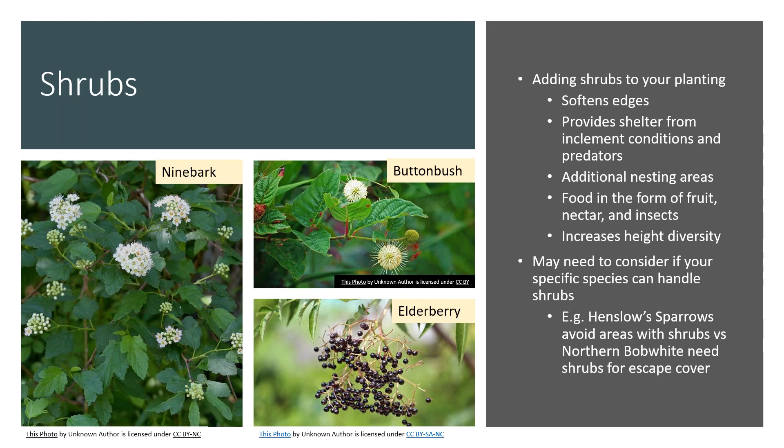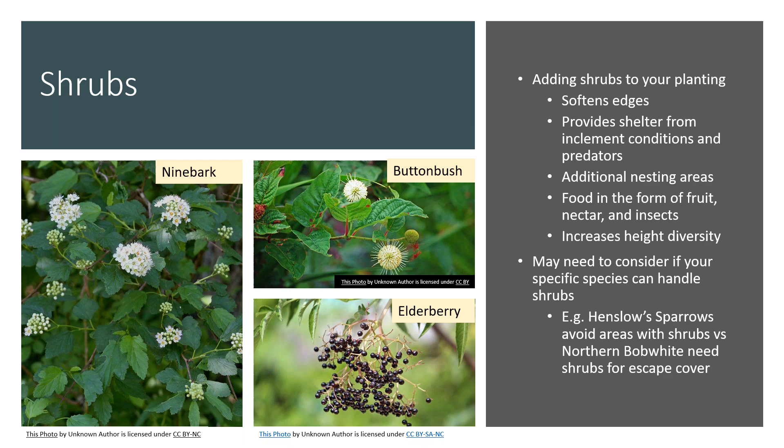When thinking of pollinator plantings, adding shrubs can be super beneficial. Shrubs help soften edges, provide a more continuous area especially when planting near a wooded area, provide shelter from inclement conditions and predators, additional nesting and pupating areas for pollinators and birds, and food in the form of fruit, nectar, and insects. They also increase height diversity in your planting. Some favorite shrubs are ninebark, buttonbush — which sometimes needs more moist soil — and elderberry, which produces very nutritious berries that birds love. However, remember that Henslow sparrows cannot tolerate shrubs whereas it is a habitat requirement for Northern Bobwhite.